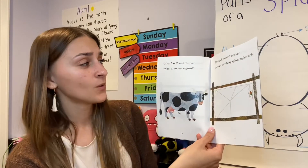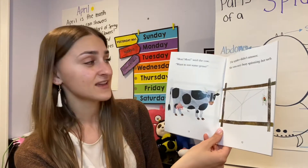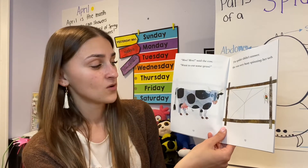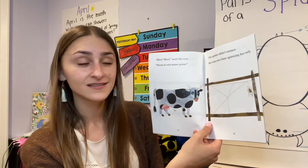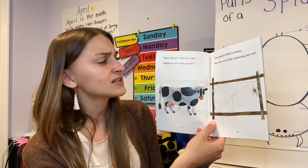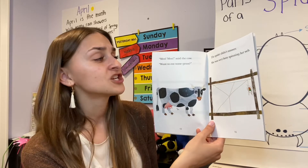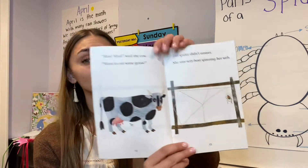Moo, moo, moo, said the cow. Want to eat some grass? The spider didn't answer. She was very busy spinning her web.